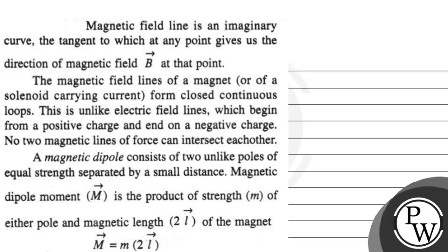Hello Bacho, let's read this question. It says, magnetic field line is an imaginary curve, the tangent to which at a point gives the direction of the magnetic field at that point.